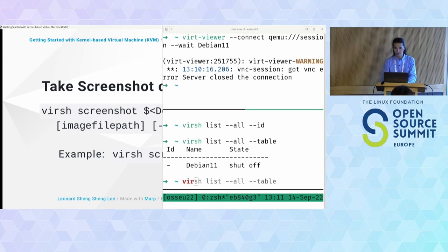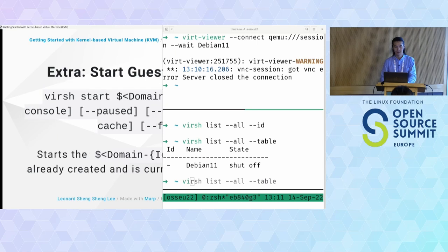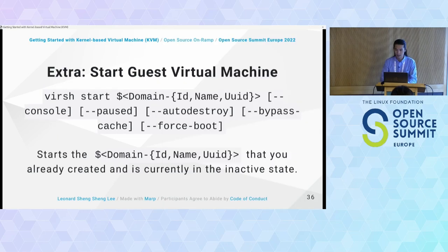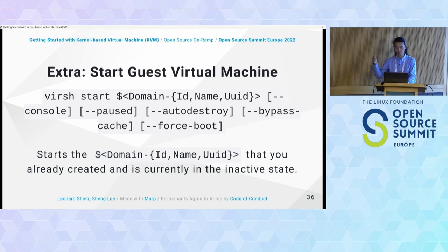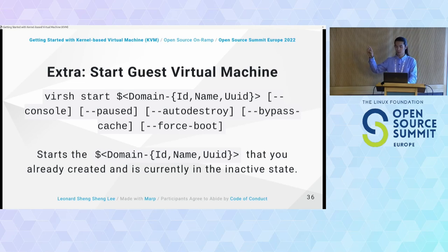To start a VM again, use virsh start followed by the VM identifier. You can also pass --console which attaches your terminal to the domain console device. The --pause option starts the guest from a paused state if supported by the KVM driver. The --autodestroy option means the VM will be automatically destroyed when the virsh session disconnects.